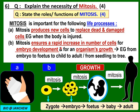B: mitosis ensures a rapid increase in the number of cells — firstly for embryo development, and then after the organism is born, it will increase the number of cells for the organism's growth, so that the size of the organism can increase from embryo to fetus to child to adult, or from seedling to young plant to tree. Throughout this process, mitosis must occur to increase the number of cells for growth.